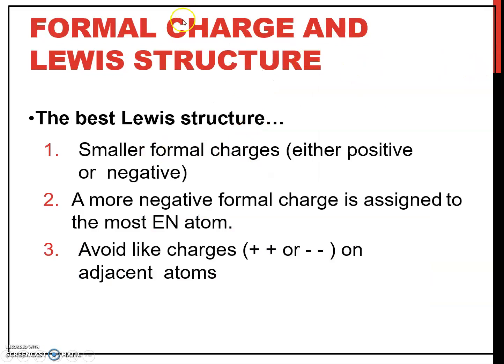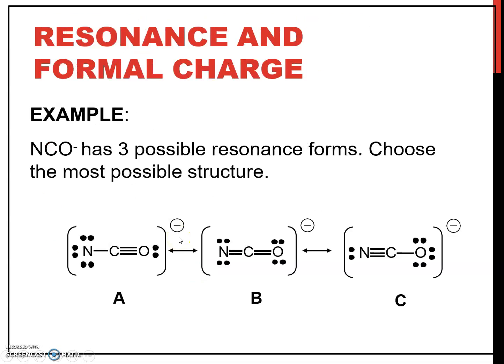So for this ion, 3 fluorine atoms have 0 formal charge but boron has a negative 1 formal charge. For the best Lewis structure, it should have the smallest formal charge — either positive or negative, with 0 being the best. Second, a more negative formal charge should be assigned to the most electronegative atom. Third, avoid placing a positive or negative charge on adjacent atoms.